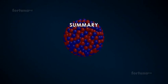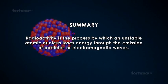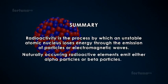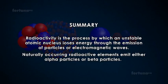Summary: Radioactivity is the process by which an unstable atomic nucleus loses energy through the emission of particles or electromagnetic waves. Naturally occurring radioactive elements emit either alpha particles or beta particles.